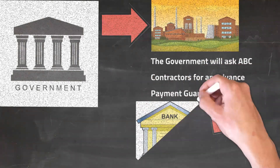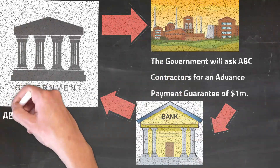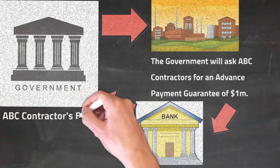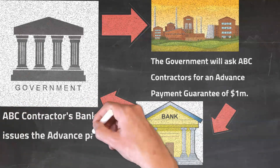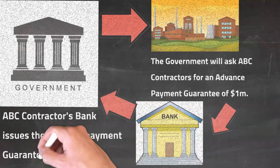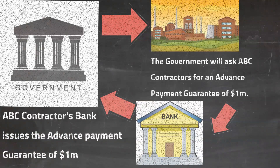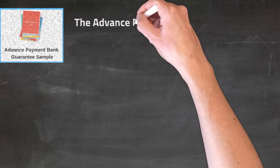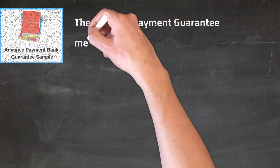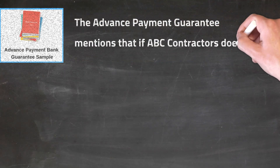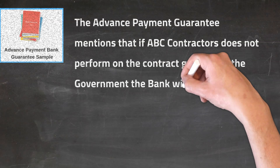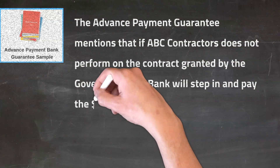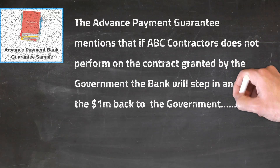ABC Contractors will approach its bank and if the request is successful, ABC Contractors' bank will issue the advance payment guarantee of $1M to the government. The advance payment guarantee mentions that if ABC Contractors does not perform on the contract granted by the government, the bank will step in and pay the $1M back to the government.